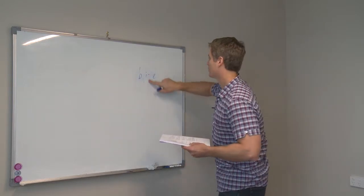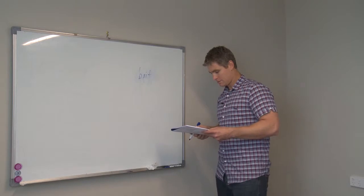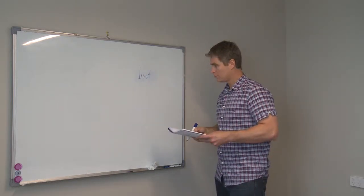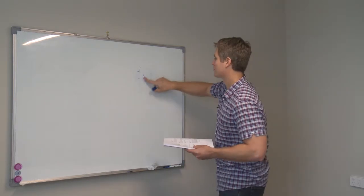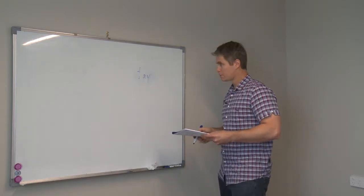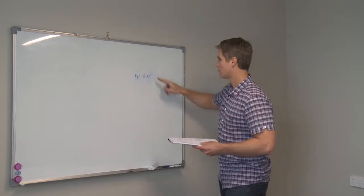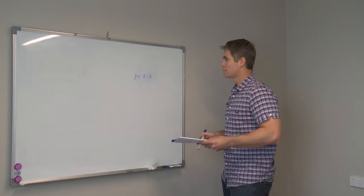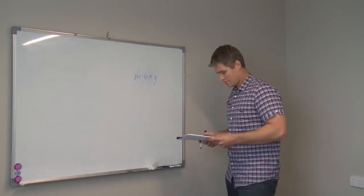Bait. Oops, shouldn't have rubbed out the T. Bait. Boots. Toot. Made up word — Tay. May. Mane. Train. This one's a made up word. Mane.